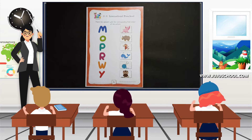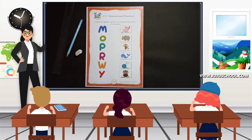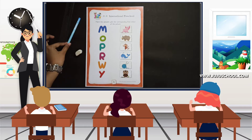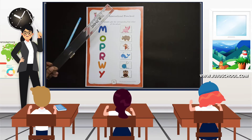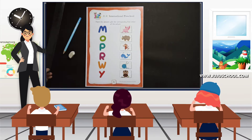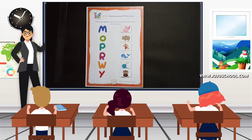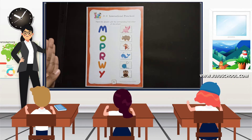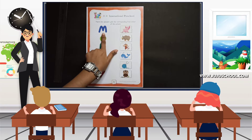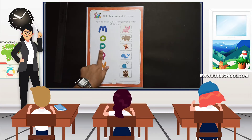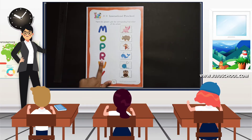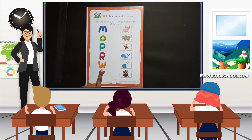Let's get started. The required materials are a pencil, an eraser, and a scale. First we'll read what are the alphabets given on the left side: M, O, P, R, W, Y.